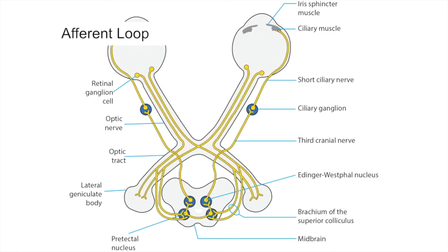In the afferent loop, light reaching the eye stimulates retinal photoreceptors and intrinsically photosensitive retinal ganglion cells. These cells generate a signal that travels in retinal ganglion cell axons through the optic nerves, optic chiasm, and both optic tracts, branching off in the brachium of the superior colliculus to synapse in the dorsal midbrain pre-tectal nuclei on both sides.